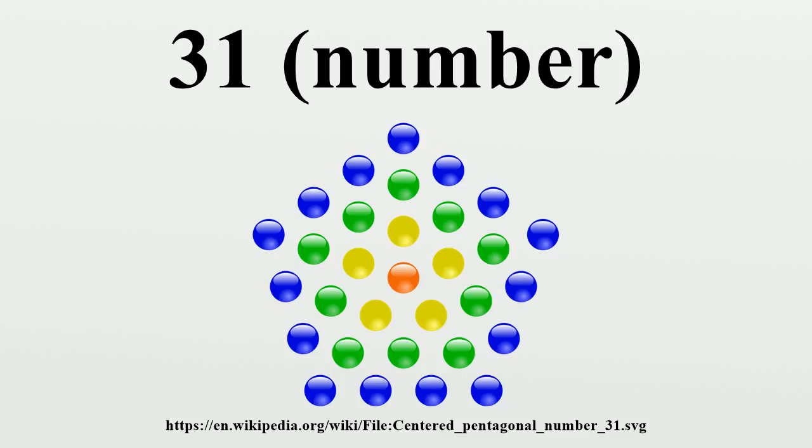The numbers 31, 331, 3,331, 3,333,331, and 33,333,331 are all prime. For a time, it was thought that every number of the form 3...1 would be prime. However, the next nine numbers of the sequence are composite.